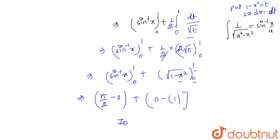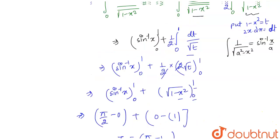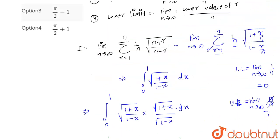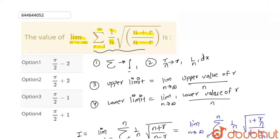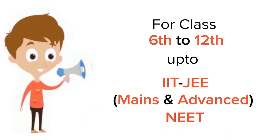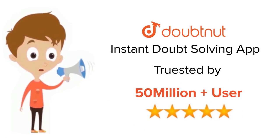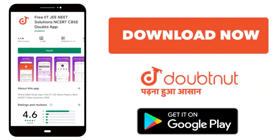Our final answer for the integral is π/2 − 1. So the correct option is option 3, that is π/2 − 1. For class 6 to 12, IIT-JEE and NEET level — trusted by more than 5 crore students. Download the Doubtnut app today.